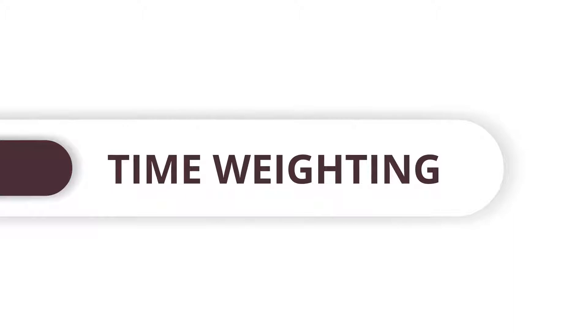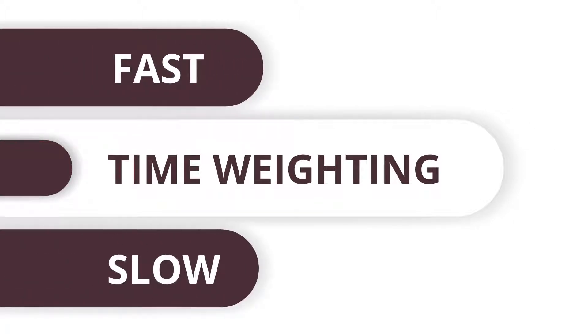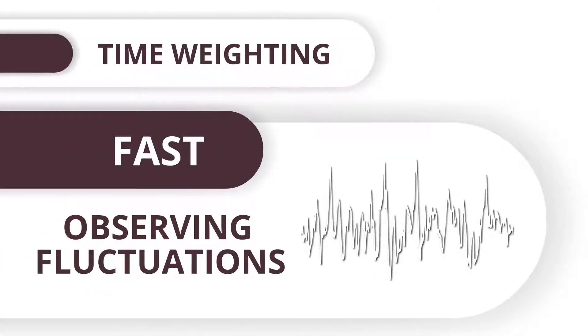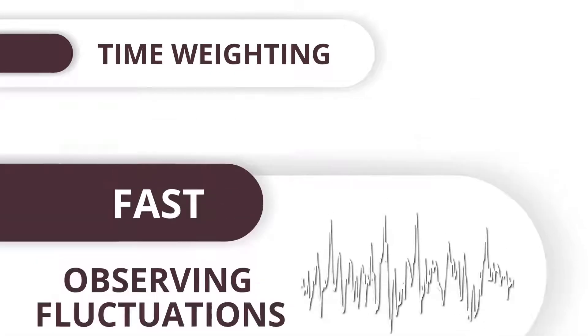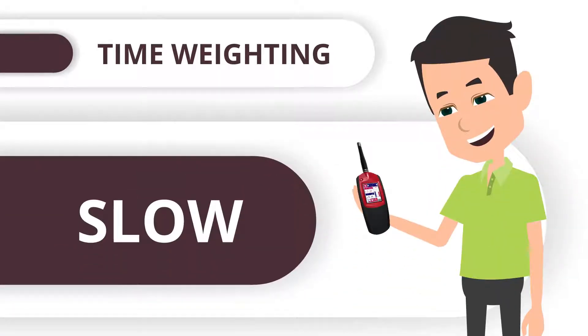Another parameter to be chosen is time weighting. The most common choices are fast and slow, which mean exactly what you would think. The fast time weighting is better for observing fluctuations, whereas the meter may be easier to read when set to slow.